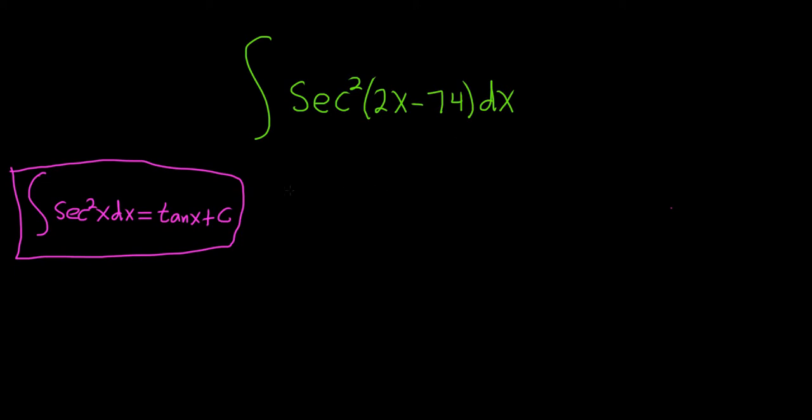So maybe a good strategy would be to start by making a u substitution. We'll let u be equal to 2x minus 74. And then du will simply be 2 dx. And now we don't have a 2 here in the integral, so we'll divide both sides by 2 to make it match. So these cancel. So we get 1 half du equals dx.